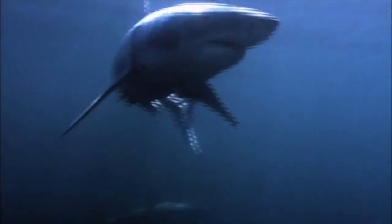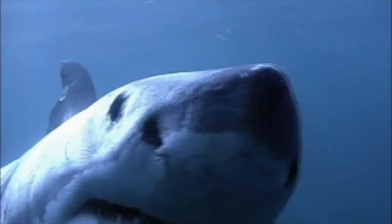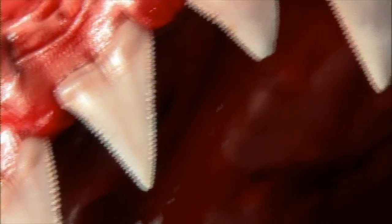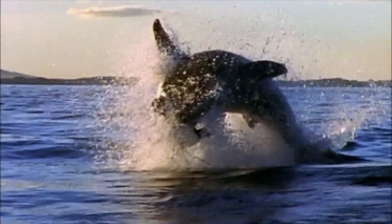So great whites are uniquely equipped to be one of the ocean's ultimate predators. Their keen vision, electrosensory perception, highly evolved jaws, and serrated teeth are a devastating combination.